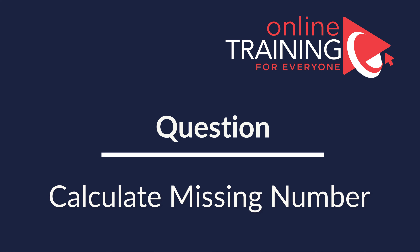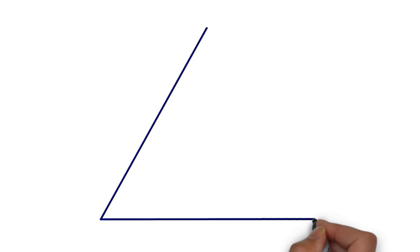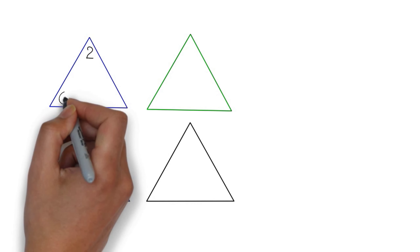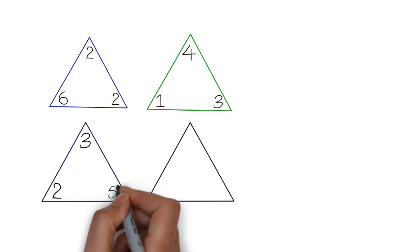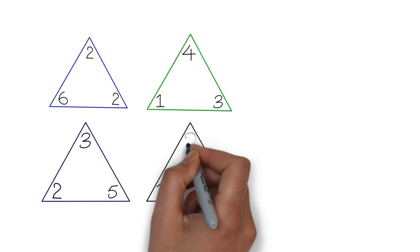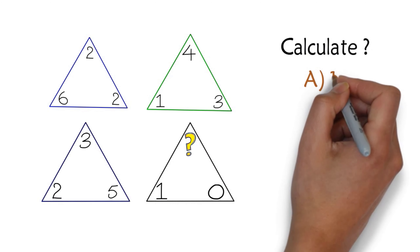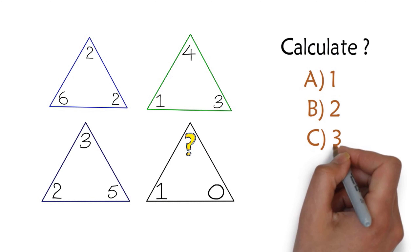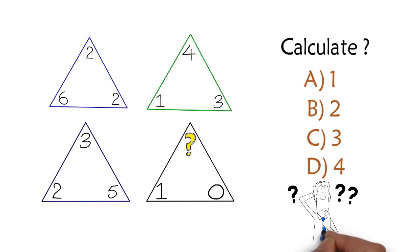Here is another puzzling question you might find difficult to solve. You are presented with four triangles; each triangle has a number in the corner and you need to calculate one of the missing numbers in the upper corner of the black triangle. You have four different choices: choice A is 1, choice B is 2, choice C is 3, and choice D is 4. Can you determine the answer?